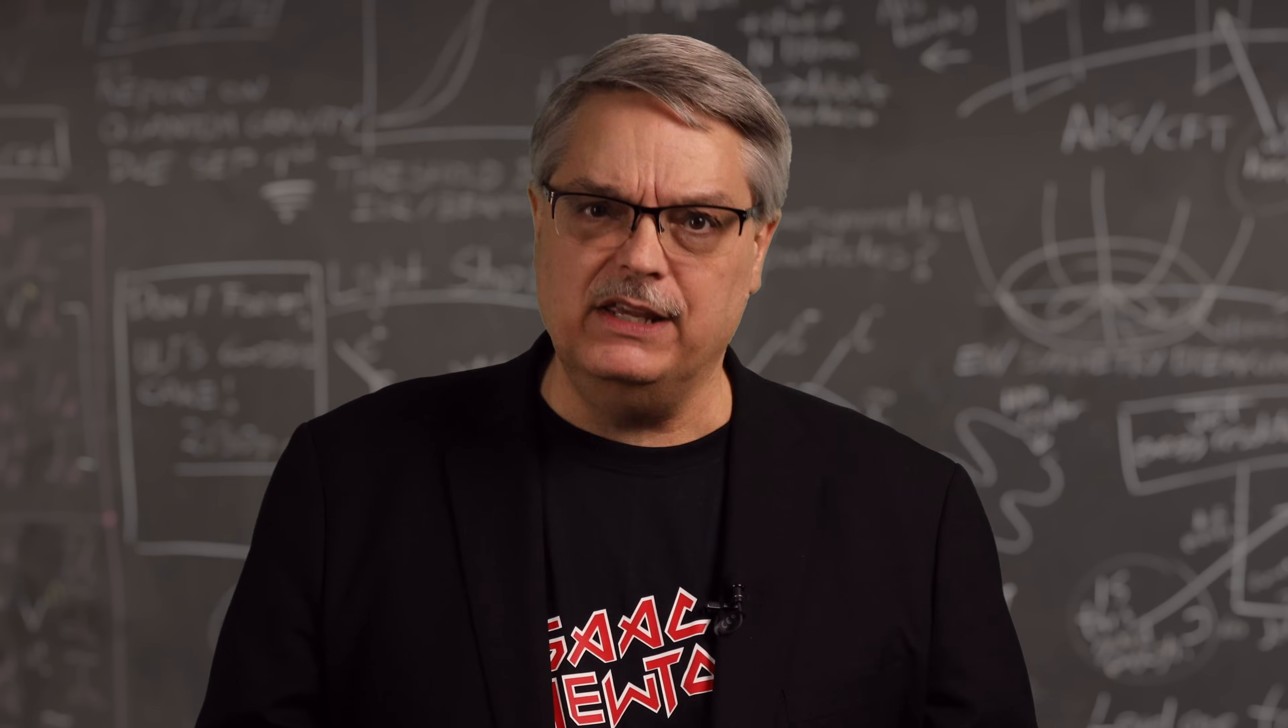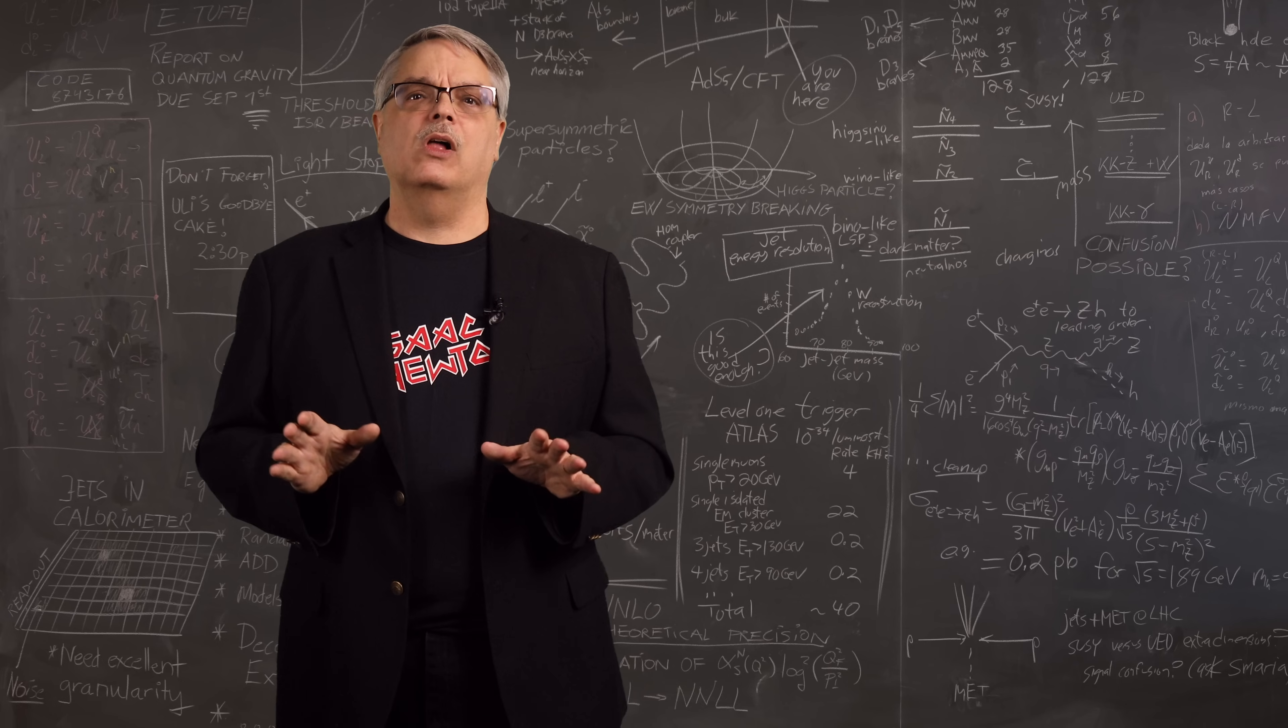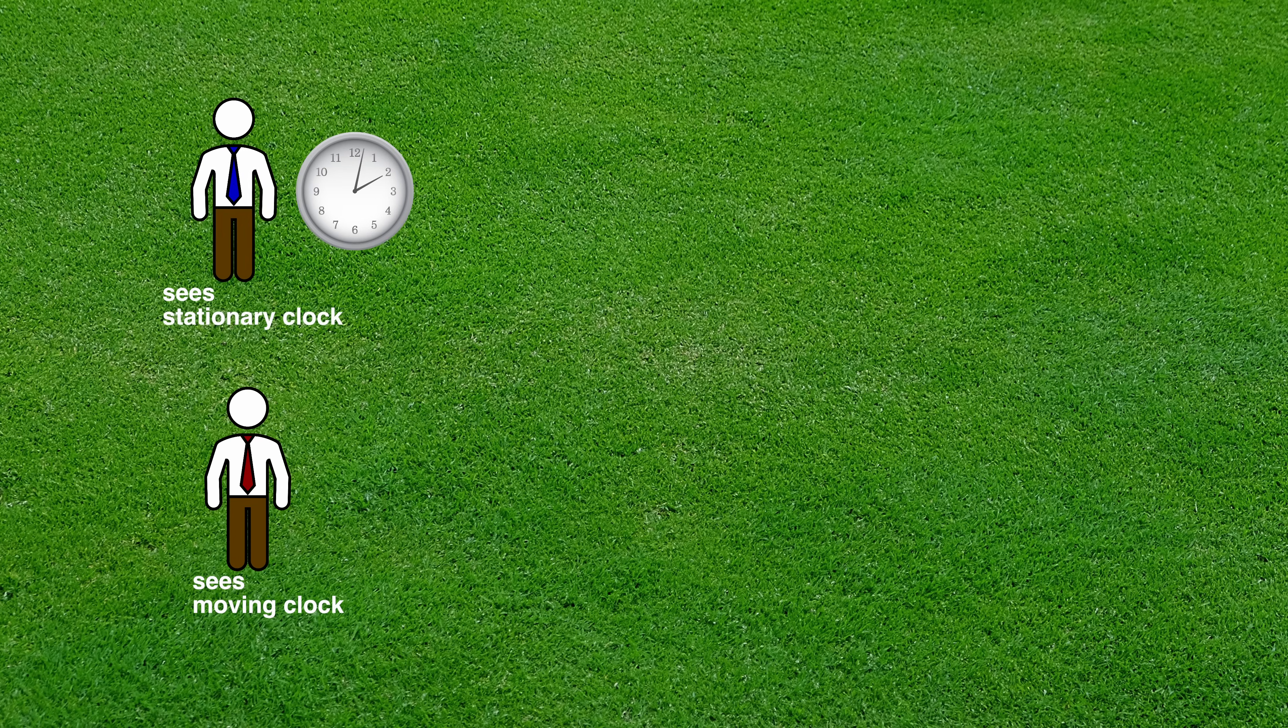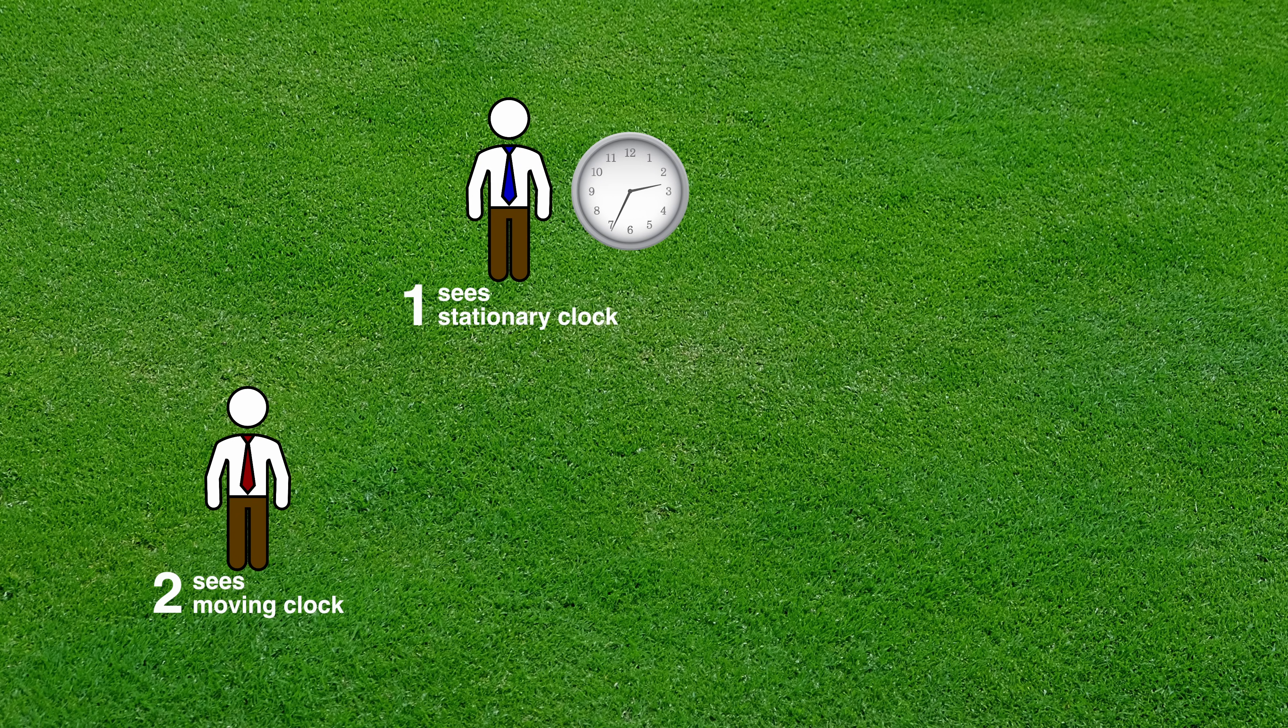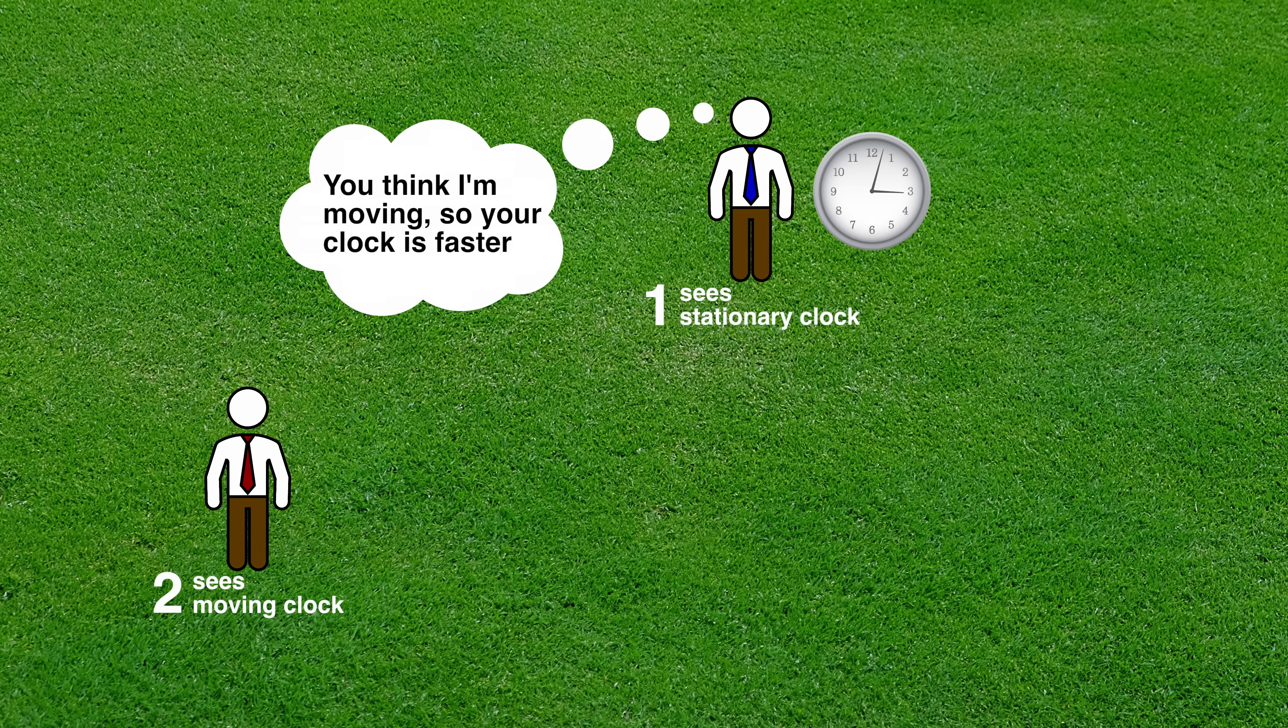There are two key points I want to make here. The first is that this makes absolutely no sense. Not because the two clocks tick at different rates, although that's pretty weird, but because of an ambiguity. Suppose you label the two people as number 1 and number 2. If we take number 1 as seeing the clock to be stationary, and number 2 as seeing it moving, we see that number 2 experiences more time than number 1.